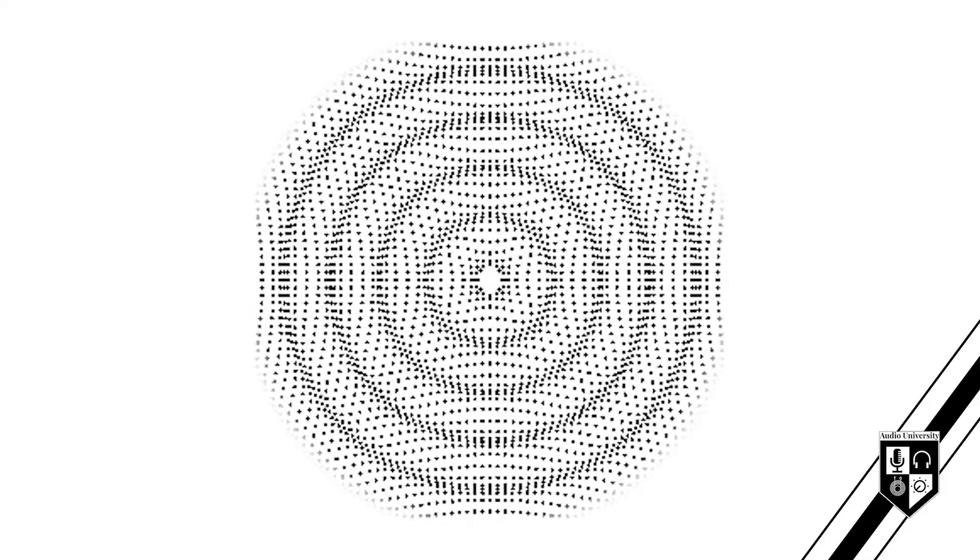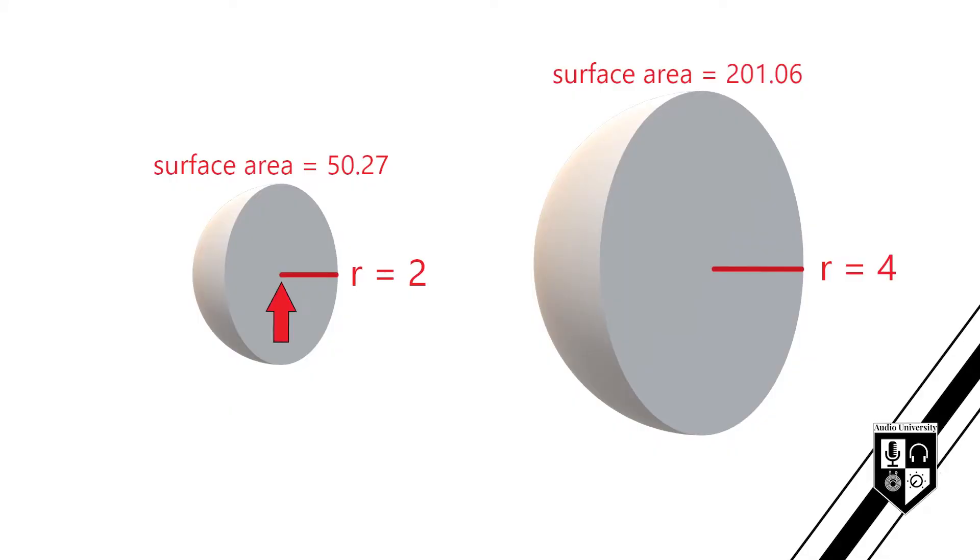As a sound wave travels away from its source, it creates a sphere of acoustical energy. The sound wave carries a finite amount of energy, which is spread thinner and thinner across the surface area of that sphere as the sphere grows larger. The sphere on the left has a radius of two feet, while the sphere on the right has a radius of four feet. The sound source is located at the center of each sphere, so think of the radius as the distance between you and the sound source.